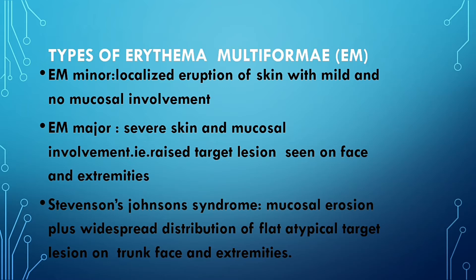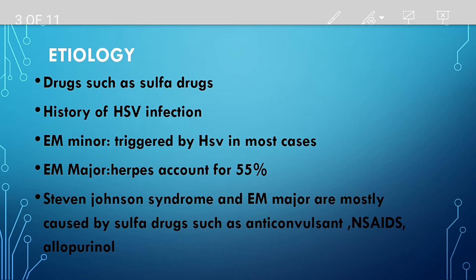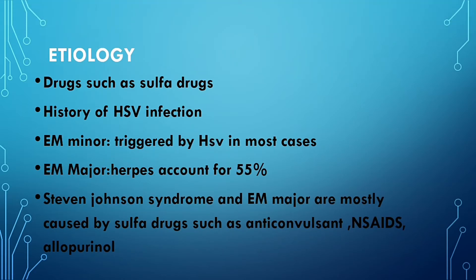The third type is Stevens-Johnson syndrome, where there is mucosal erosion plus widespread distribution of flat atypical target lesions on the trunk, face, and extremities. Stevens-Johnson syndrome has more widespread distribution of lesions, and nowadays it is also considered a separate disease.